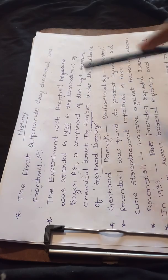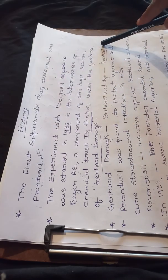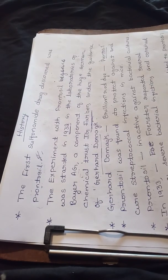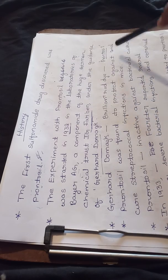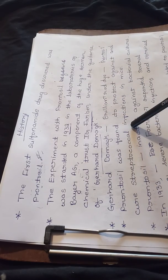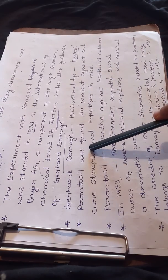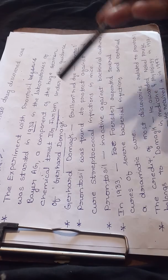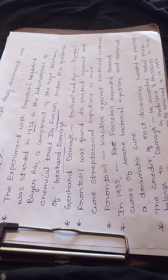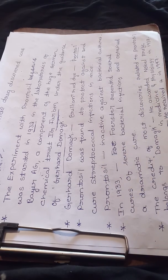Gerhard Domag and his team were studying a brilliant red dye. Later, he named it prontosil, and their studies found that this prontosil is very good in the treatment of streptococcal infections in mice. In the year 1933, Forrester produced one report.